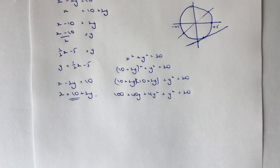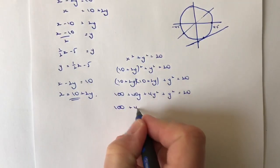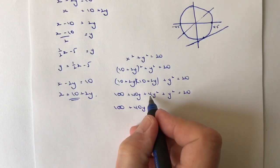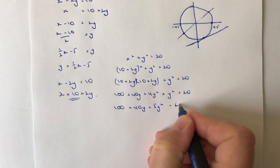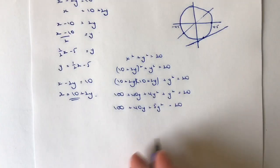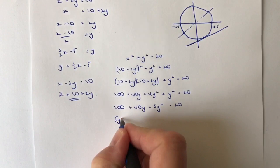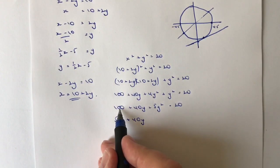So let's now start to tidy that up a little bit. I'm going to get 100 plus 40y, and then I've got plus 5y squared equals 20. Well, like we did before, we really want this in the format where you've got what's called ascending order.